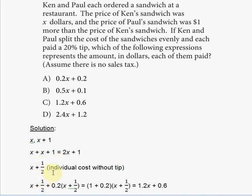And now we're going to calculate and also add the twenty percent tip. So Ken pays X plus one-half dollars and Paul pays X plus one-half dollars as well.